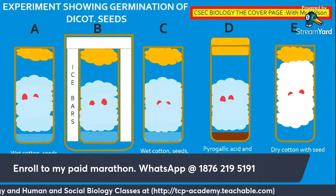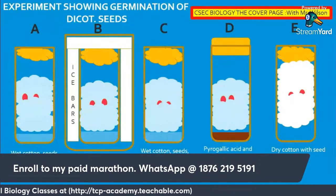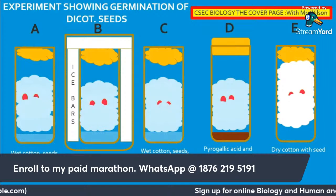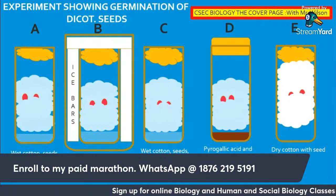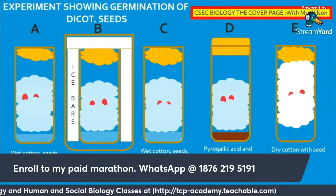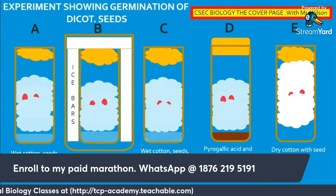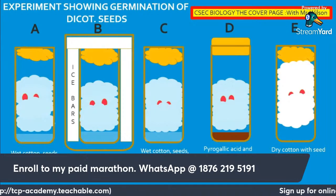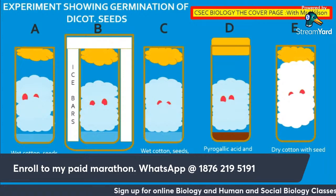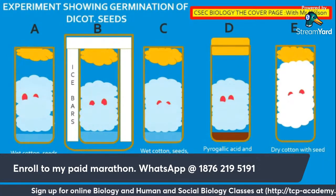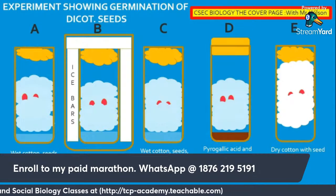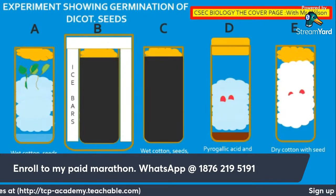In the experiment we will examine the conditions needed for germination. To carry out the experiment we will need to sterilize all apparatus to ensure there is no foreign organism. We will need boiling tubes, seeds, cotton, rubber bung, black paper, an ice pack or refrigerator, tape to label, pyrogallic acid, and sodium hydroxide.